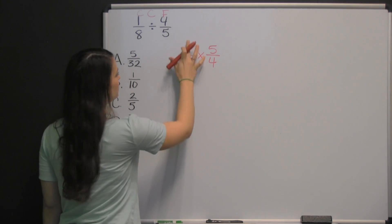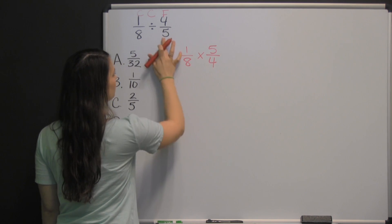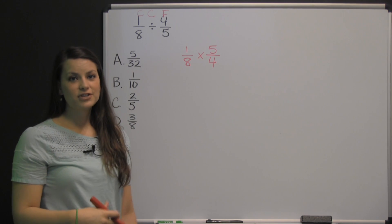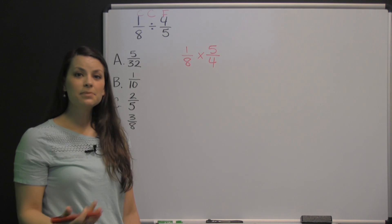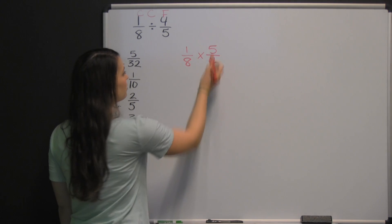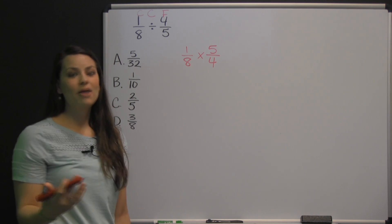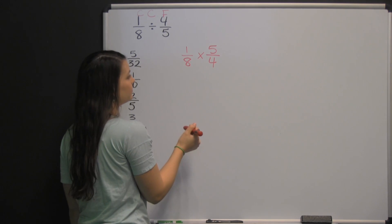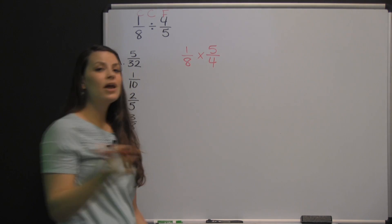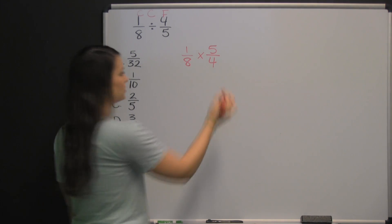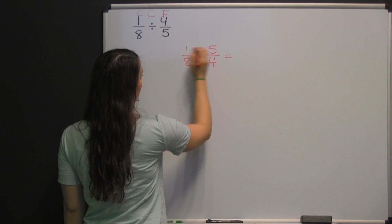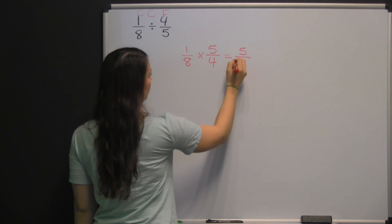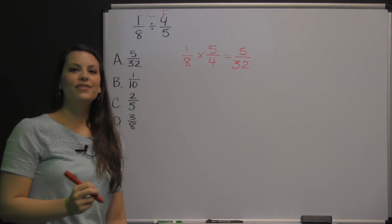So, that's why you'll hear people say multiply by the reciprocal — we're taking our first fraction and multiplying it by the reciprocal of the second fraction. At this point, you can look to see if there's any cross-canceling you can do to simplify before you multiply. The five and the eight have no factors in common, and neither do one and four. So now we simply multiply straight across: numerator times numerator, one times five is five; denominator times denominator, eight times four is thirty-two. So the answer is five thirty-seconds.